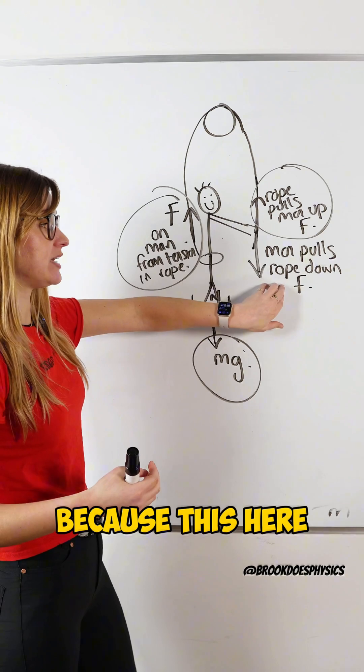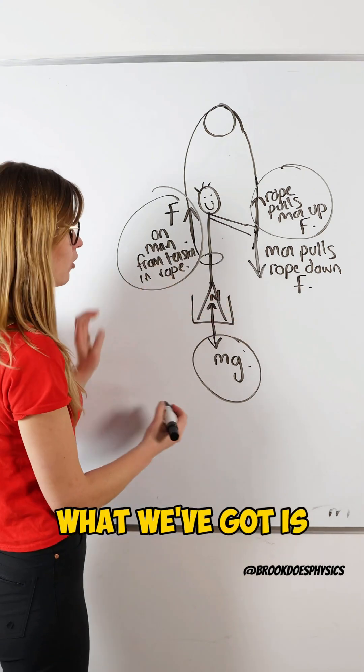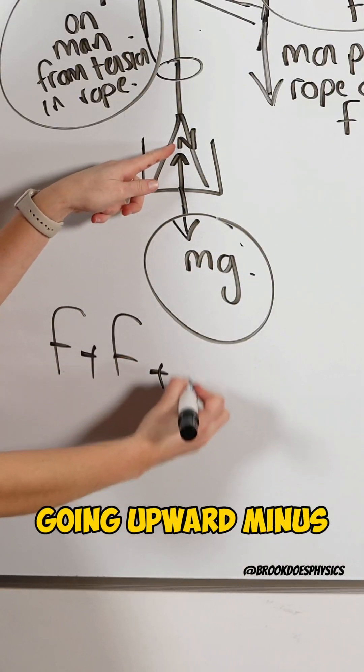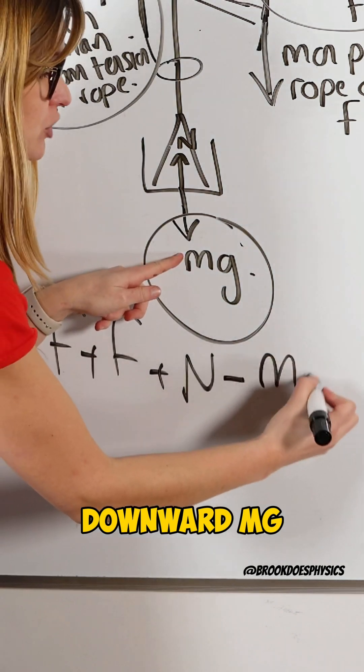So if we look at just the forces on the man, because this here is the force on the rope, what we've got is two forces going upwards, so F plus F, a normal force going upward, minus, because it's going downward, Mg.